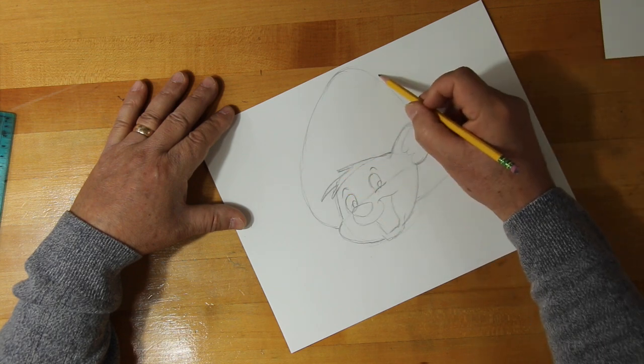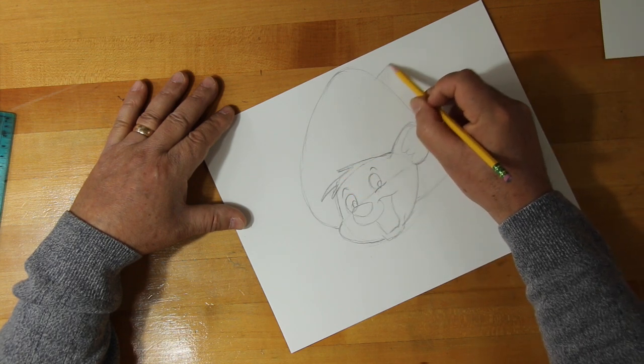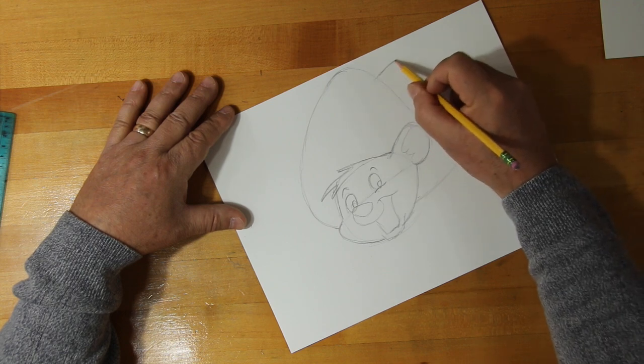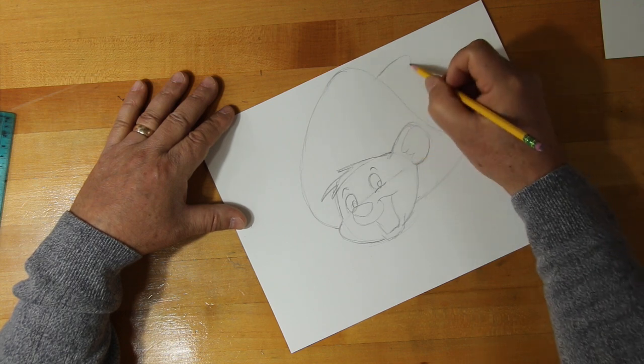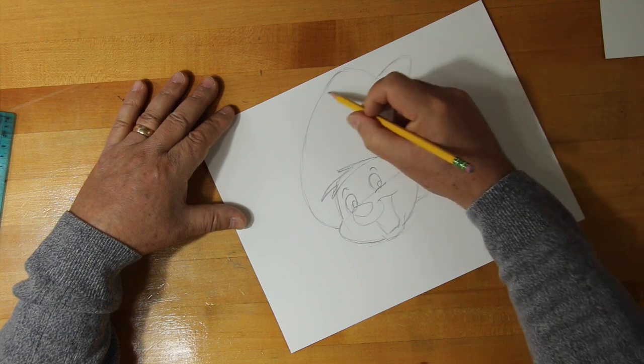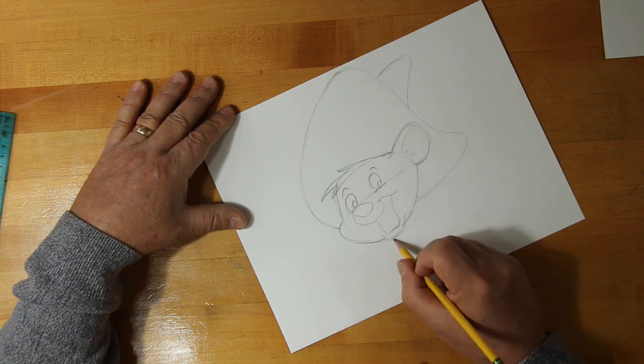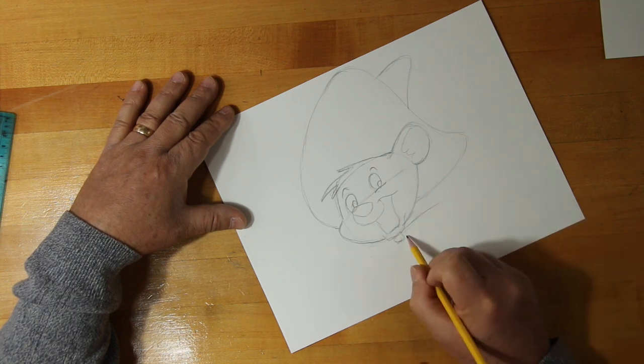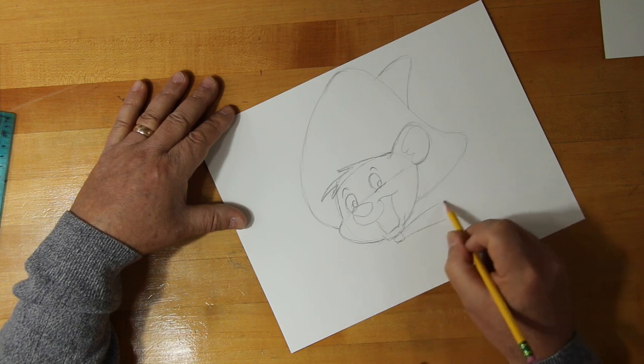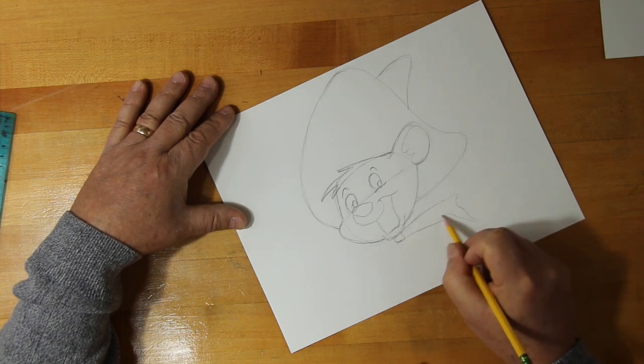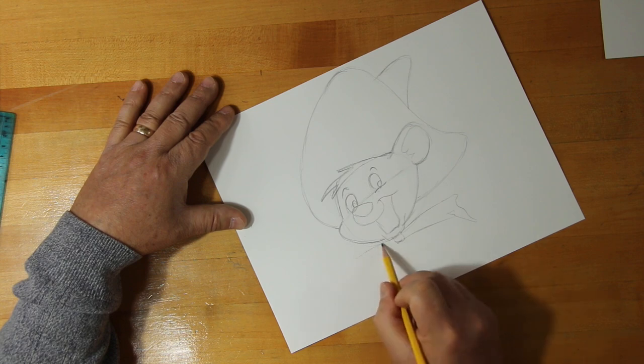And then the upper part, excuse me. It's just a triangle but it's been rounded off. His little bow tie's about here and it stretches out in this direction and in this direction.